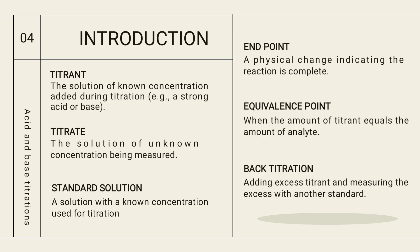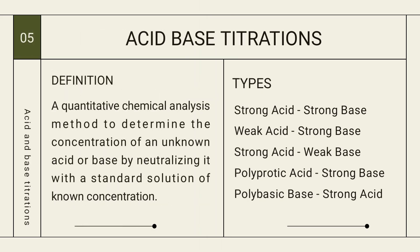In back titration, we add excess titrant — a strong acid or strong base of known concentration — in excess quantity, then measure the excess with another standard solution. The definition of acid-base titration is: a quantitative chemical analysis method used to determine the concentration of an unknown acid or base by neutralizing it with a standard solution of known concentration. We measure the volume at which the unknown acid in the conical flask is neutralized by the standard solution in the burette.